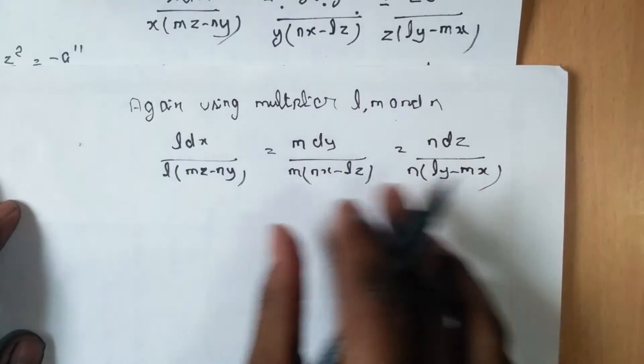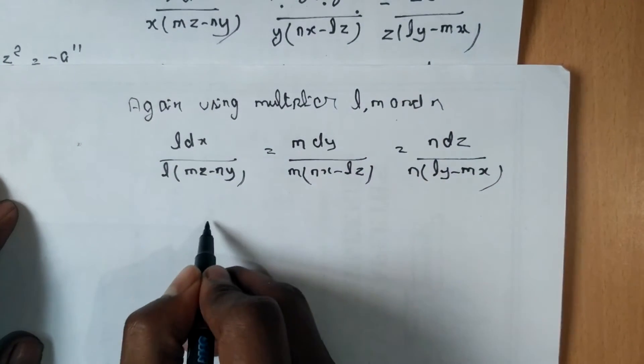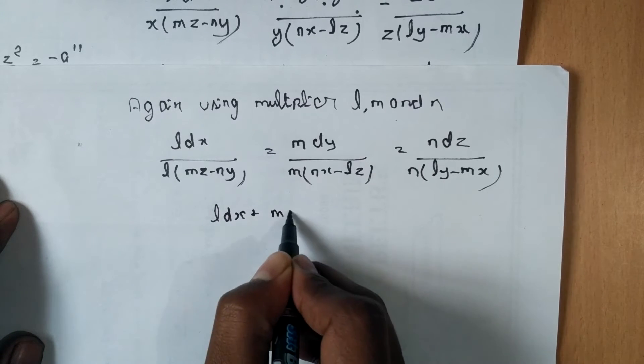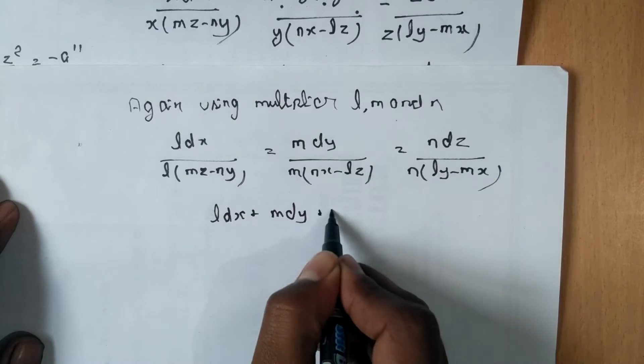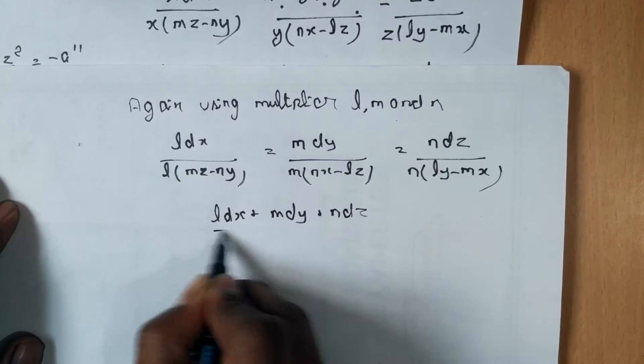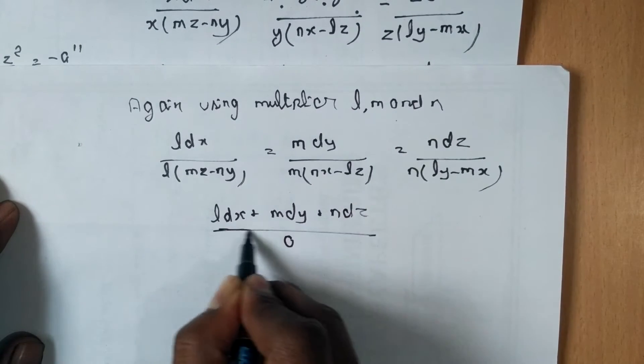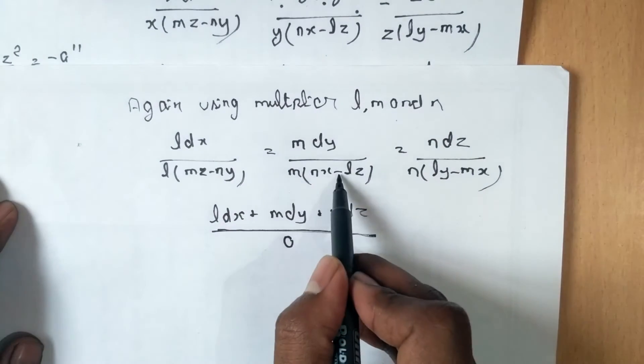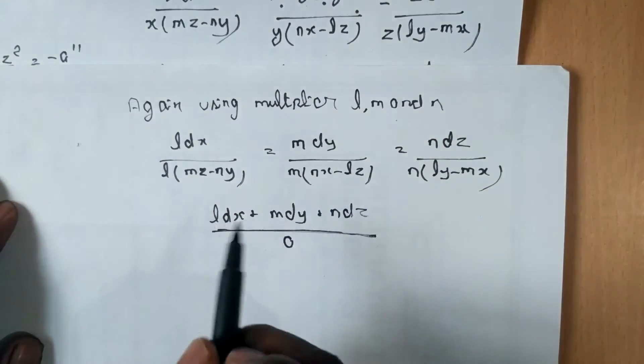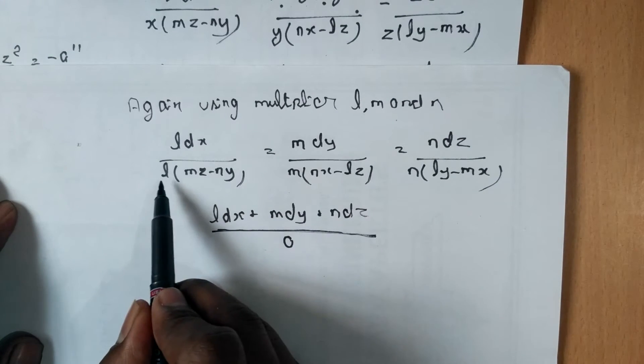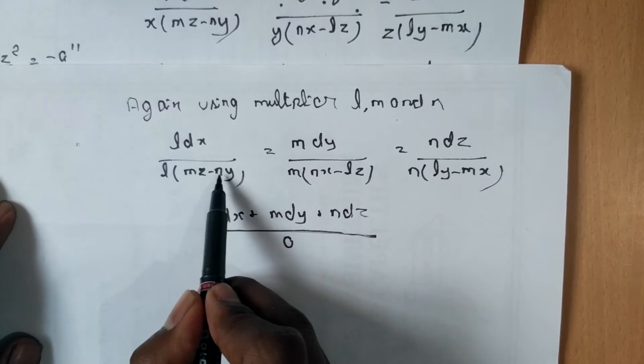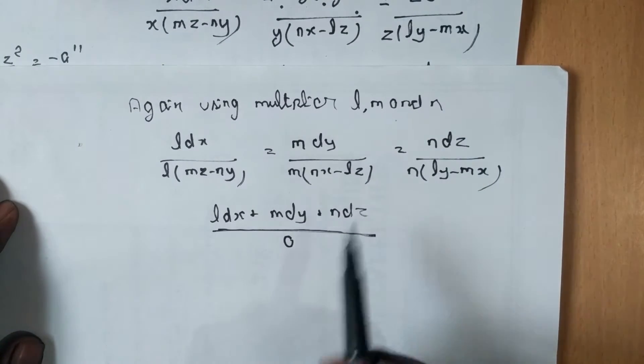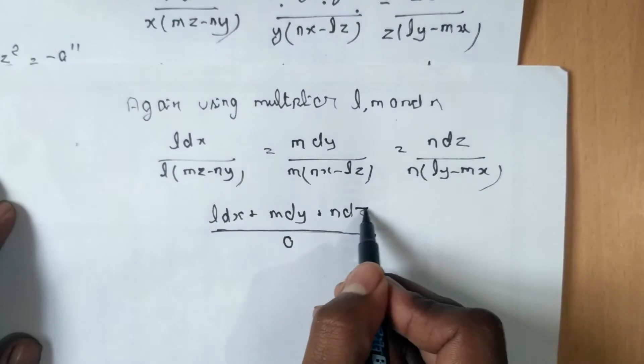We get l dx plus m dy plus n dz upon 0, because lmz here minus mlz will cancel out. Here lny minus nly, and here plus nly cancel out. All the terms will cancel out and we get the denominator 0.